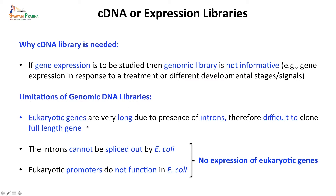There are certain limitations of the genomic DNA library. First, if you are creating a library for the eukaryotic genome, eukaryotic genes are very long because they contain non-coding sequences — the introns. Each gene may have multiple introns, and because of that these eukaryotic genes are very, very long. Therefore, they are difficult to clone as full-length genes, with each gene represented in a single clone or just a couple of clones.